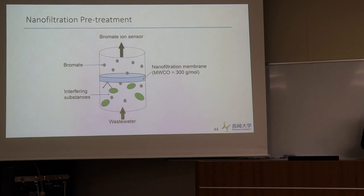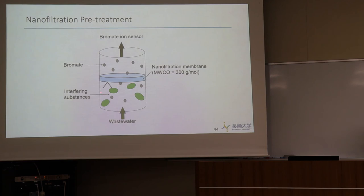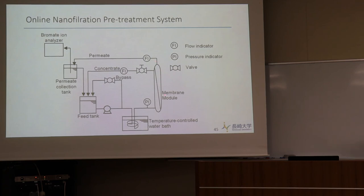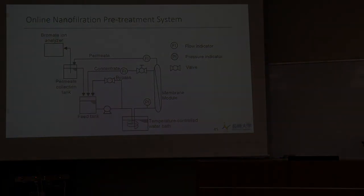We need to remove this background fluorescence substance. We use a nanofiltration membrane to separate the interference substance from the bromide ion — the wastewater goes through that membrane and then to the bromide ion sensor. The water from a feed tank goes through a water bath to control temperature, then through the nanofiltration membrane where humic substances are separated, and the bromide solution goes to a collection tank and then to the sensor.